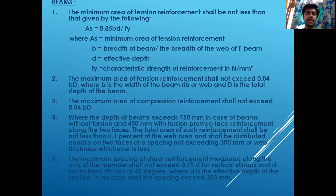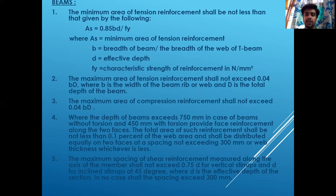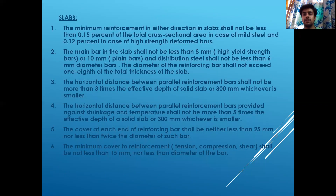Beam detailing criteria: minimum area of steel = 0.85bd/fy. Maximum area of tension reinforcement shall not exceed 0.05bd where b is the total depth; maximum must not exceed 0.04bd. Where beam depth exceeds 750 mm (without torsion) or 450 mm (with torsion), provide face reinforcement of not less than 0.1% of the web area. Maximum spacing of shear reinforcement along the axis of the member shall not exceed 0.75d.